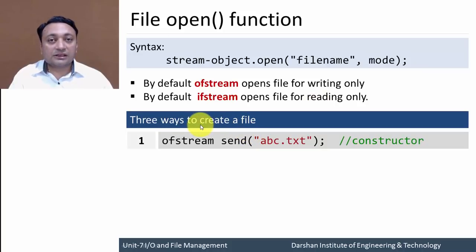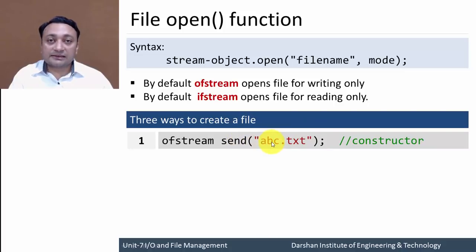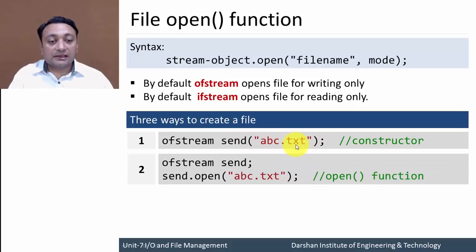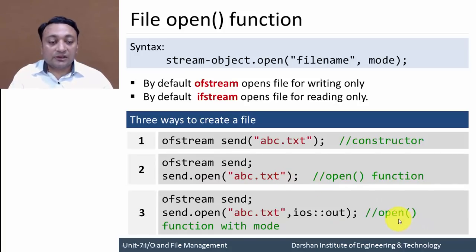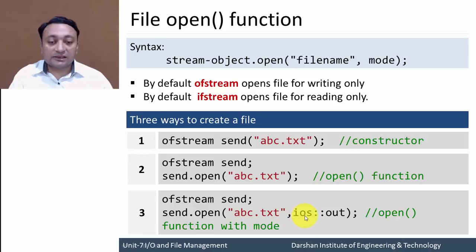There are three ways to create or open any file. The first method is using the constructor — creating an object of ofstream and passing the file name as an argument, which calls the parameterized constructor and opens the file. The second method is using the open function by calling it through the object. The third method is using the open function with a file opening mode, passing both the file name and the file opening mode as arguments.